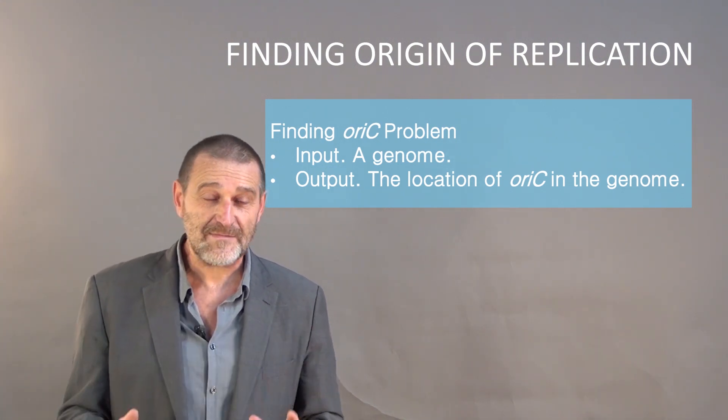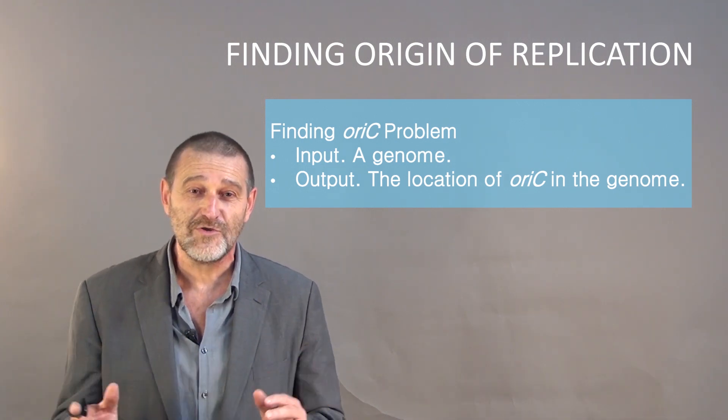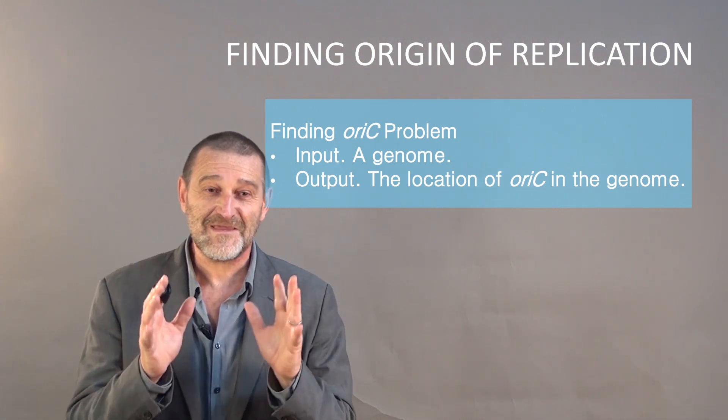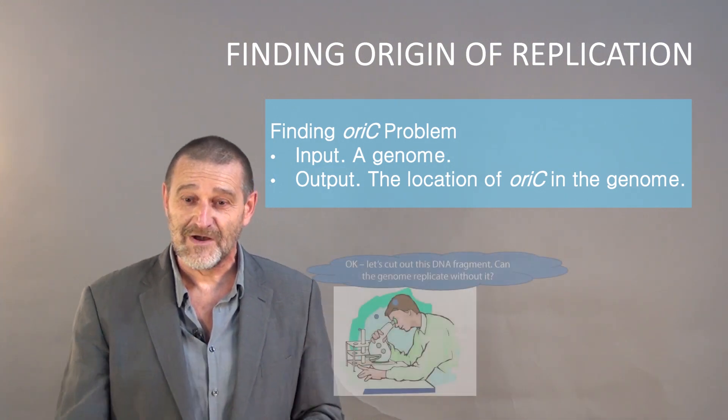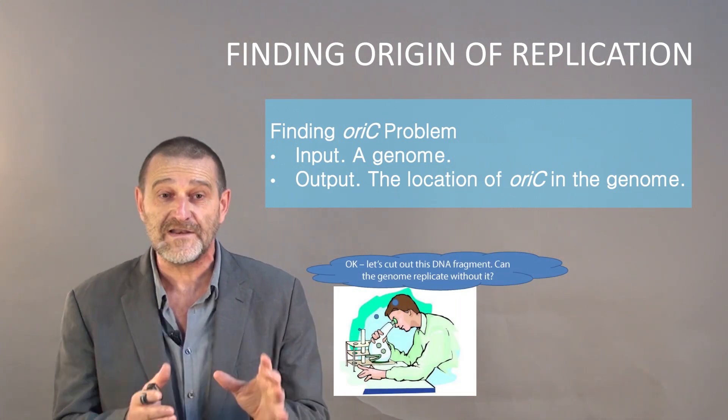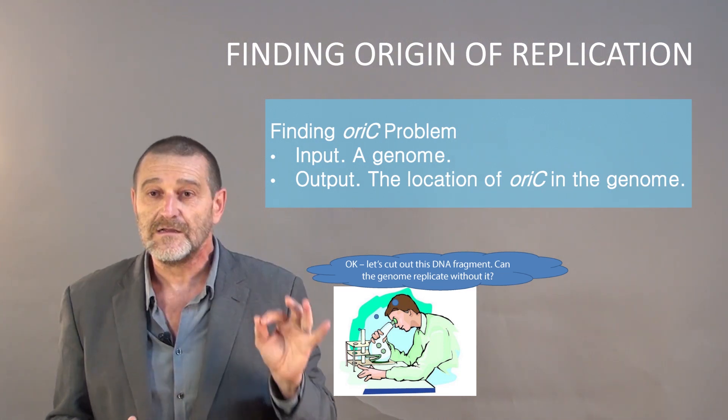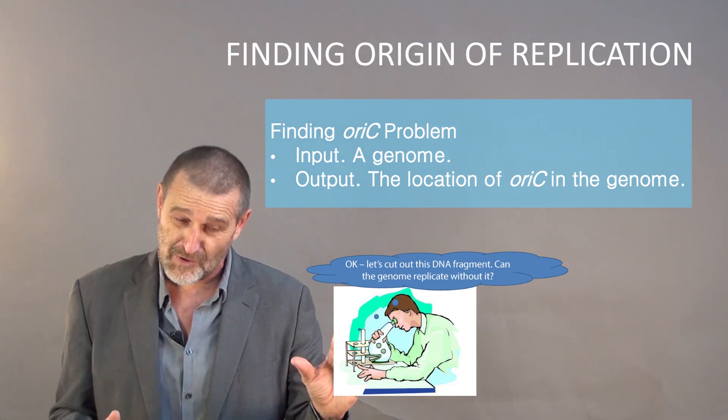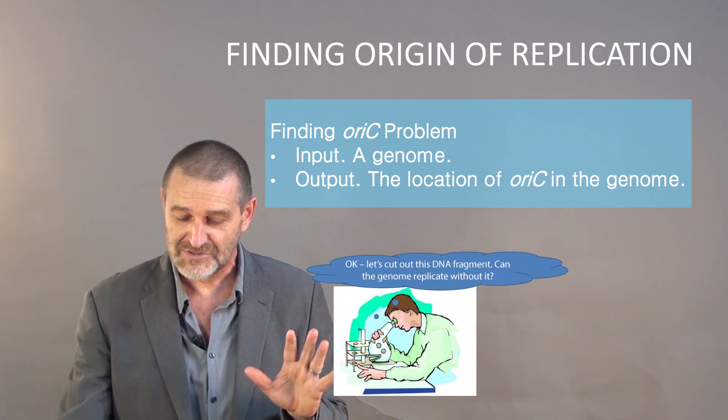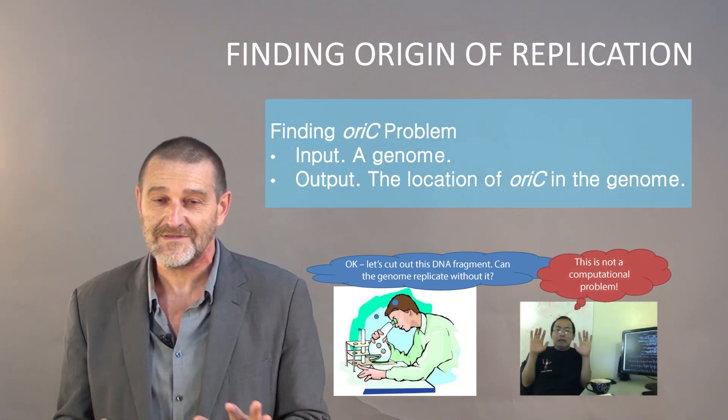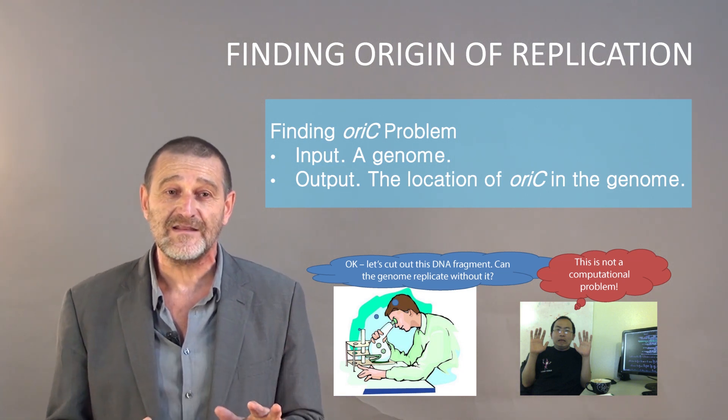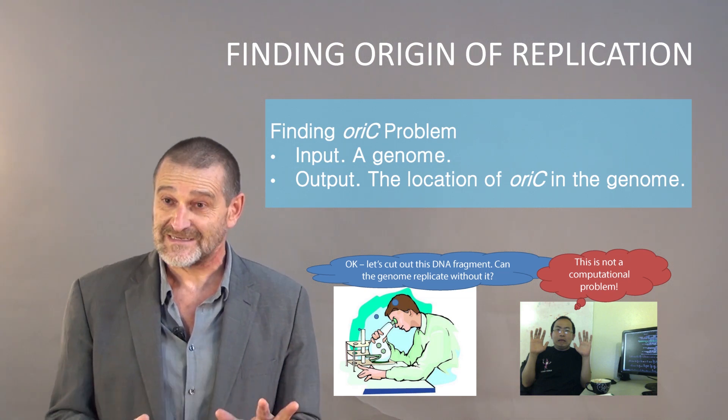You may be right or wrong, depending on who you are. Are you a computer scientist or biologist? If you are a computer scientist, then you are wrong. If you were a biologist, then you could think about an experiment. For example, you can start cutting short pieces from DNA. And when you cut a piece and the cell suddenly lost ability to replicate, it means that probably you cut out the origin of replication. But if you are a computer scientist, you should just refuse solving this problem. It is an ill-defined computational problem. So how can we turn this ill-defined computational problem into something that makes sense?